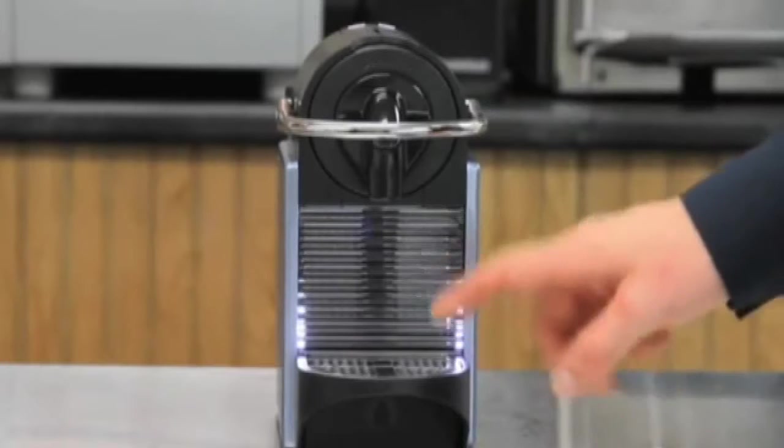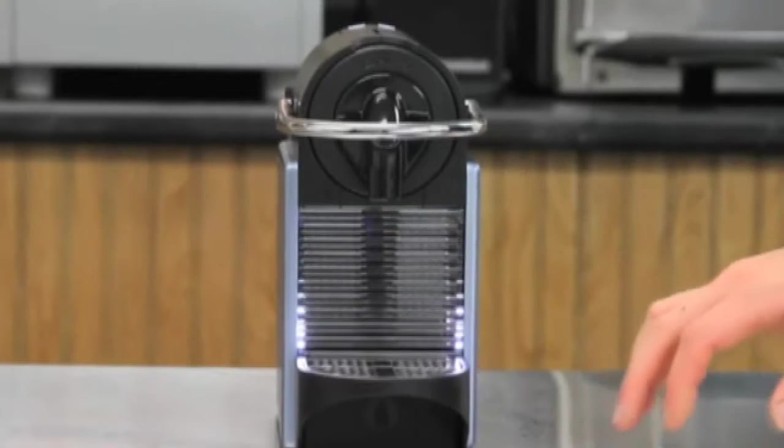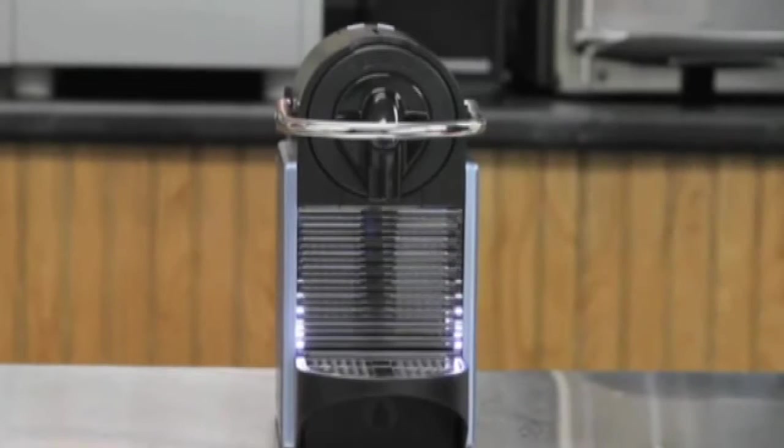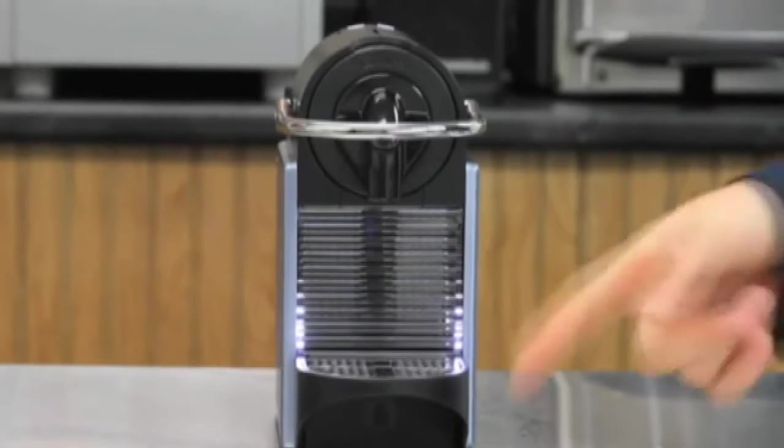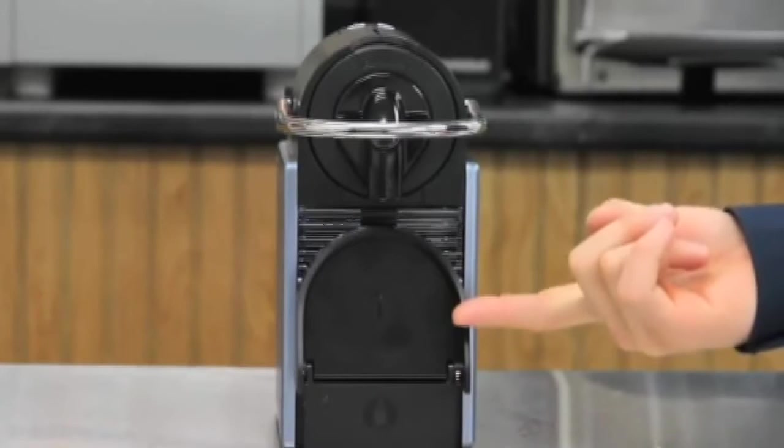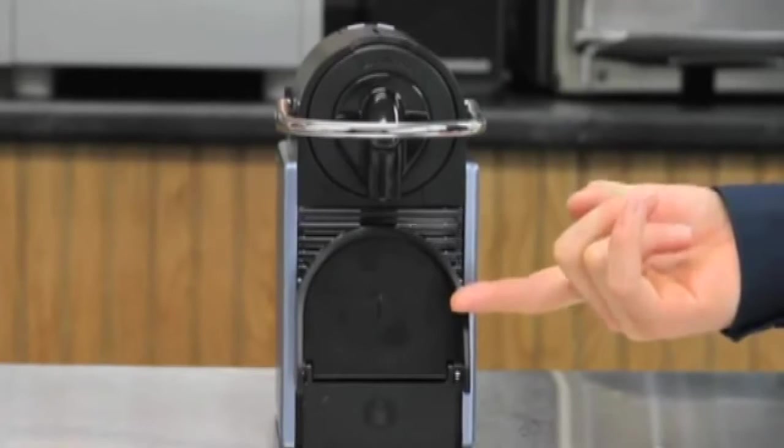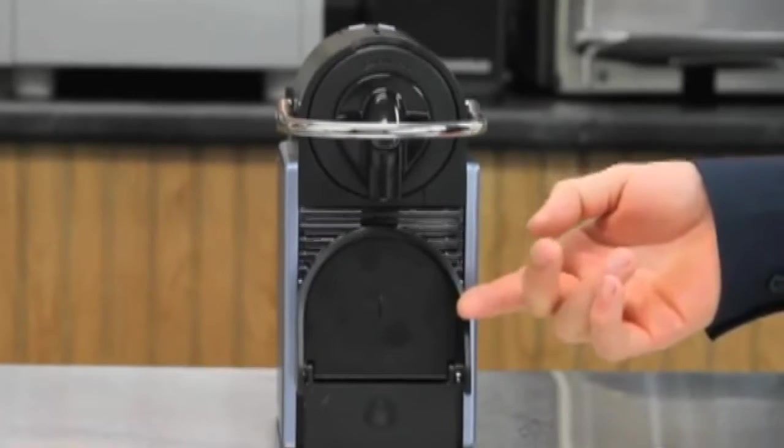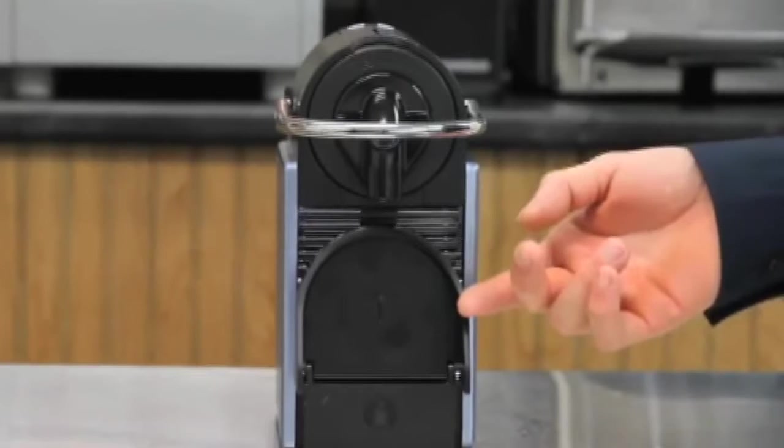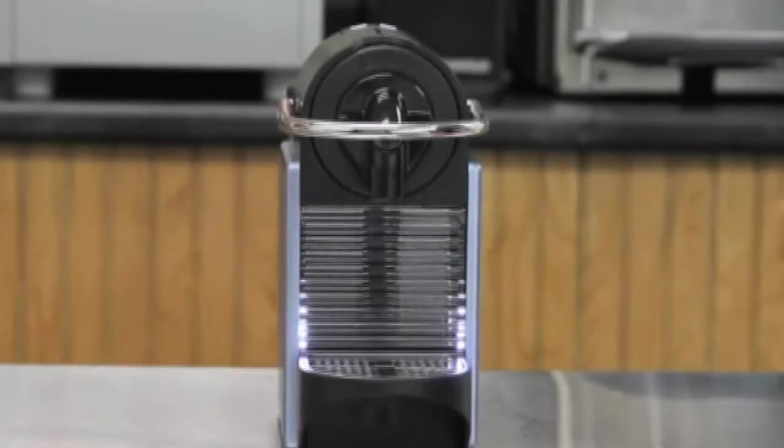On the front of the machine, you see it has a drip tray here which accommodates a cup that's up to three and a half inches tall. If your cup is five inches tall, just flip it up, and that will accommodate your larger cup, allowing for up to a five and a half inch cup to fit under there.